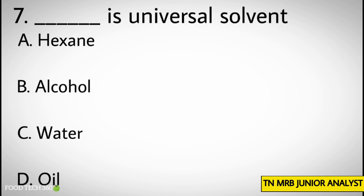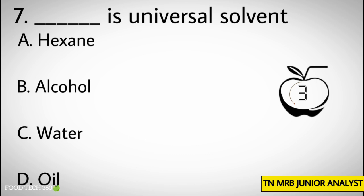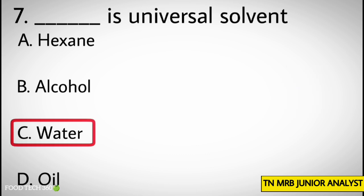Question number 7: Dash is the universal solvent — Options: A. Hexane, B. Alcohol, C. Water, D. Oil. Correct answer: C. Water.